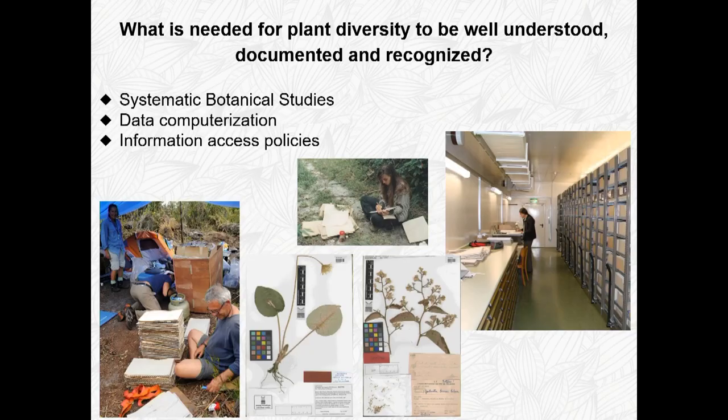After collecting, what we do in botany is dry-press the plants and put them in cardboards with notes — information on where they came from, the names, who collected, when, how the environment was, and characteristics of the plant when it was not dry, because sometimes they lose their characteristics. We keep them in herbariums, in botanical dried collections, to be able to study them. These collections need to be accessible to everyone — to taxonomists — to understand patterns and diversity. So we need data computerisation and information access policies.